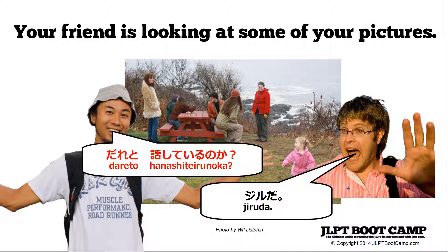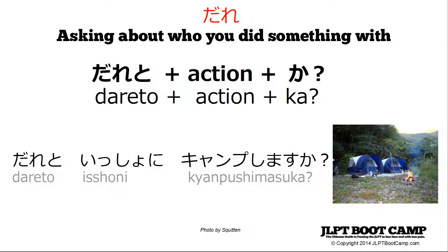'No' has a feeling of 'I want to know about this situation,' and 'ka' is the question-marking particle. So 'Jiru da' is answering — that's Jil. Here's another structure: 'dare' combining with the 'to' particle, which means 'with.' This can be used to ask who you are with or what you're doing an action with. For example, 'dare to isho ni kampu shimasu ka' — who are you camping with? This is a question in polite form, which you'll see on the N5 exam.